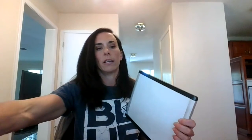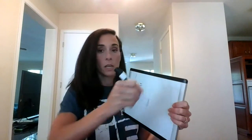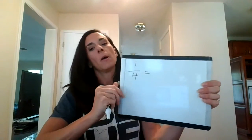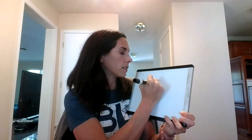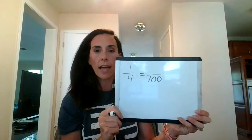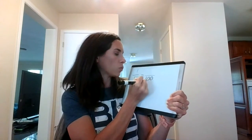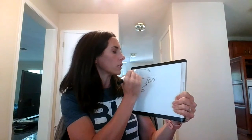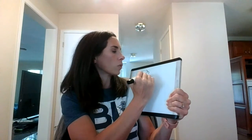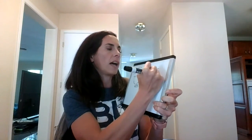Percents. Remember that percent means out of 100. So if we want to change a fraction to a percent, the easiest way is to change it so that it has a denominator of 100. So 1/4 — we ask ourselves, 4 times what equals 100? That's 25. Whatever we do to the bottom, we have to do to the top. So 1 times 25 is 25. Now we have 25 out of 100, which is 25%.